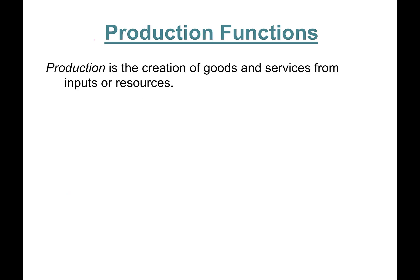Production functions. What is production? Production is the creation of goods and services from inputs or resources. The production function looks like this: total quantity produced Q equals, is a function of inputs of production. I have labor and capital. I put labor and capital in and produce a certain level of output.